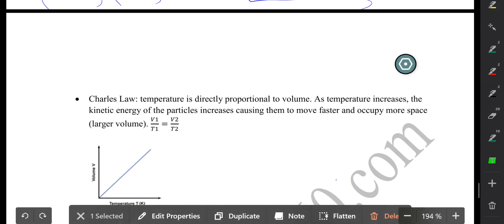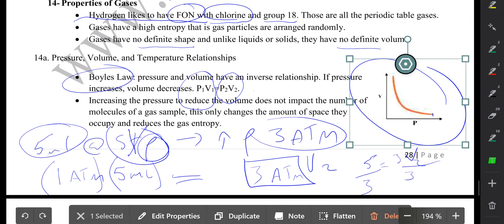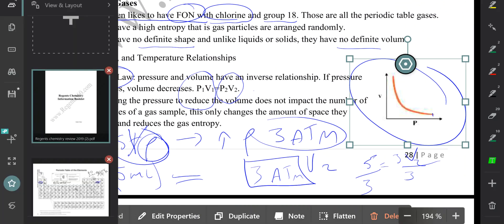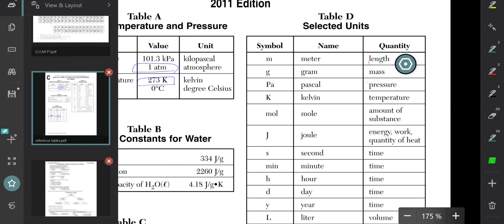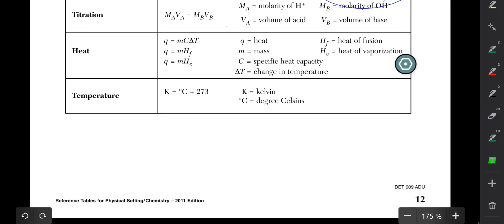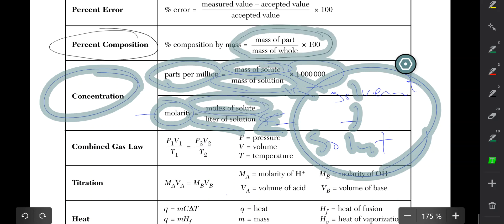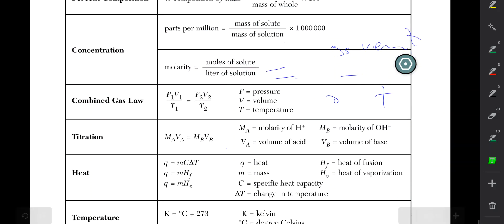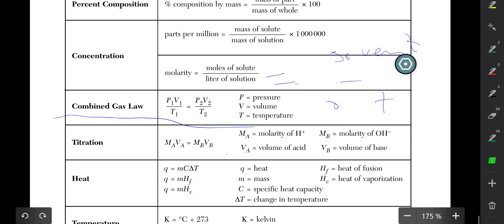You don't have to memorize that the product of the initial pressure and volume equals the product of the final pressure and volume, because if you look at table T, which is the last table in the reference tables, you'll see the combined gas law, which states that the initial pressure multiplied by the initial volume divided by the initial temperature shall always equal the final pressure multiplied by the final volume divided by the final temperature.